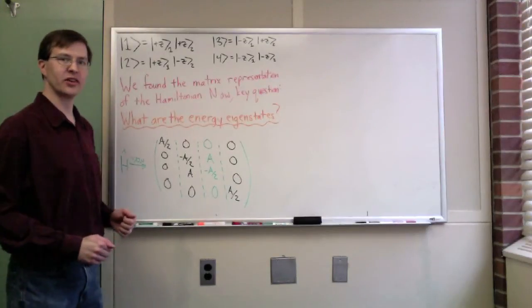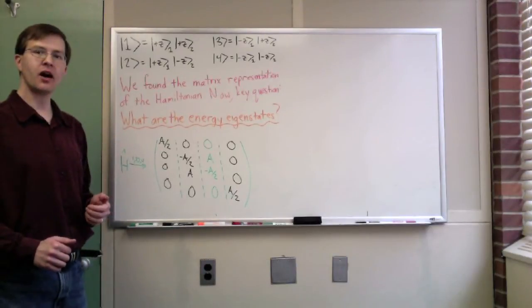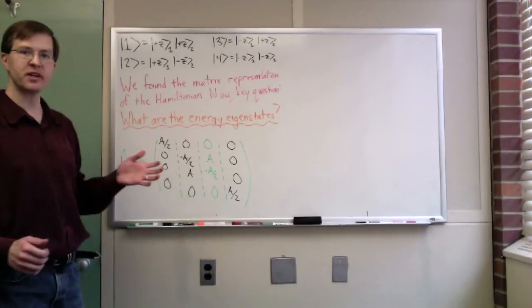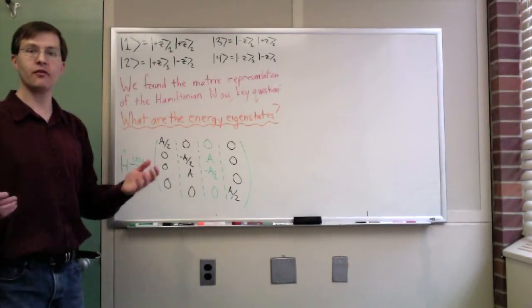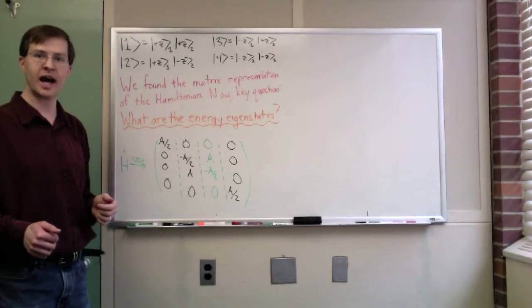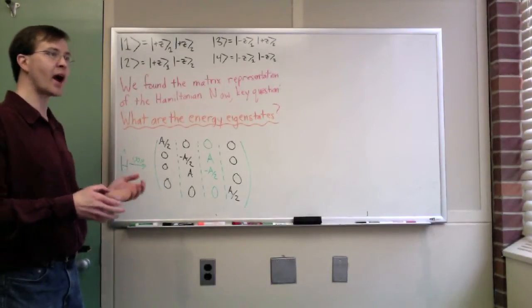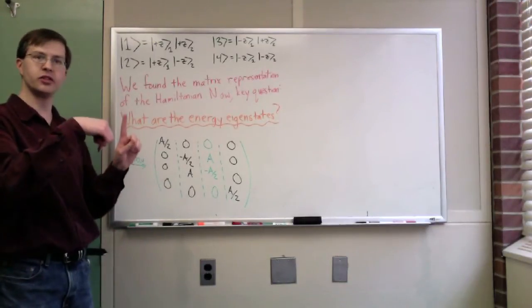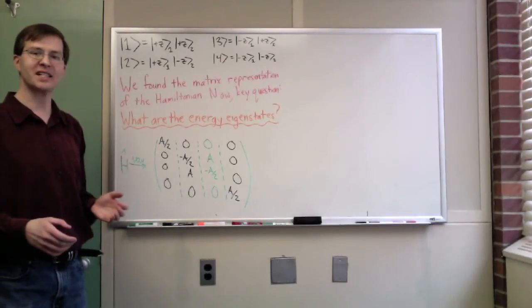Moving on with this quantum mechanics calculation, we've now found the matrix representation of the Hamiltonian for our spin-spin interaction. For the spin-spin interaction of two spin-1/2 particles, for example, the classic example is a hydrogen atom, a proton and an electron, each spin-1/2, where they have an interaction between their spins that gives positive energy when they're pointing in the same direction and negative energy when they're pointing opposite directions. We want to know what are the energy eigenstates.